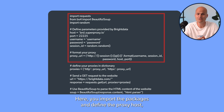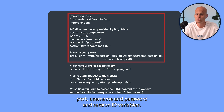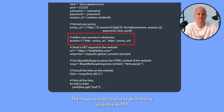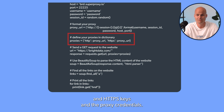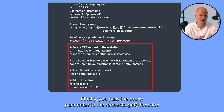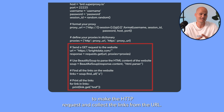Here you import the packages and define the proxy host, port, username, password, and session ID variables. Then you create a proxies dictionary with the HTTP and HTTPS keys and the proxy credentials. Finally, you pass the proxies parameter to the requests.get function to make the HTTP request and collect the links from the URL.